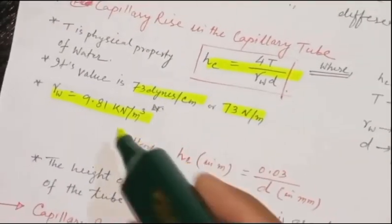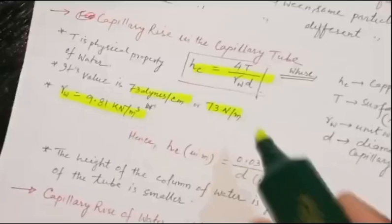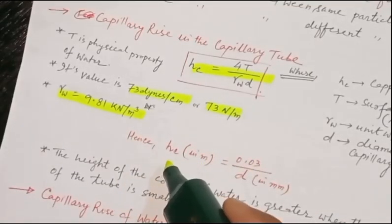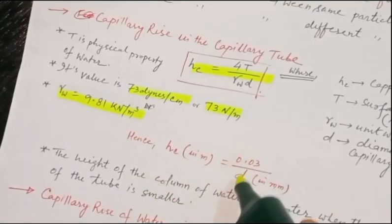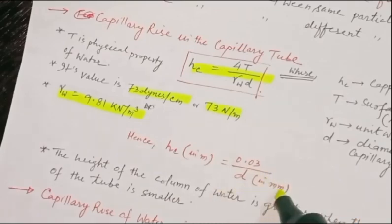Substituting the value of T, the height of capillary rise becomes hc = 0.03/d, where d must be in millimeters.